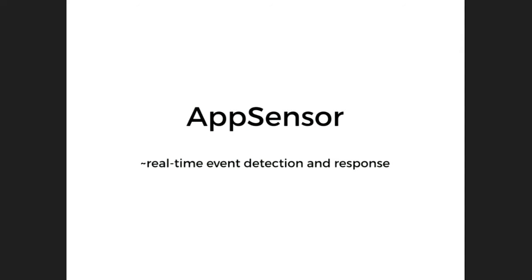A couple of logistics before we get going. We have books right outside this door — if I forget to mention that again, please remind me. This book is about AppSensor. It's a Reader's Digest version for the CISO, so please pick those up. We want them gone — take a couple of copies if you want. This is an OWASP project, so all open source, no pitch anywhere in here.